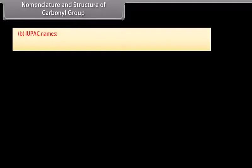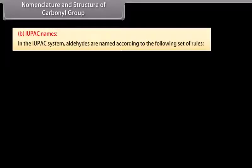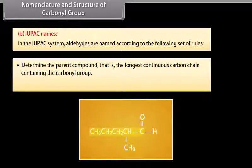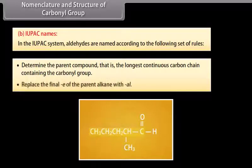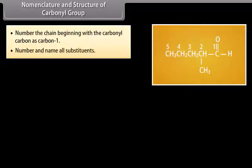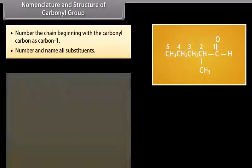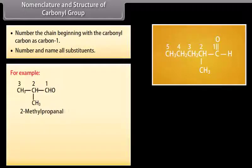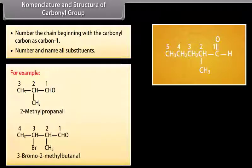In the IUPAC system, aldehydes are named according to the following rules: determine the parent compound, that is the longest continuous carbon chain containing the carbonyl group; replace the final 'e' of the parent alkane with 'al'; number the chain beginning with the carbonyl carbon as carbon-1; and number and name all substituents. For example: 2-methylpropanal, 3-bromo-2-methylbutanal.